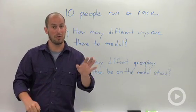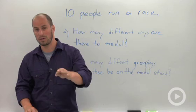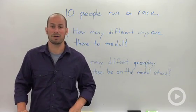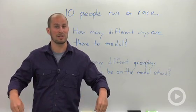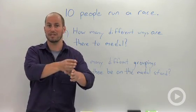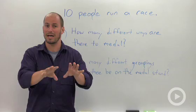So permutation, order matters, combinations, order doesn't. Another way you can think of it is permutation is a way that things are organized sort of in a linear fashion. You go first, second, third, fourth, fifth, so on and so forth. So you sort of place them in a spot.